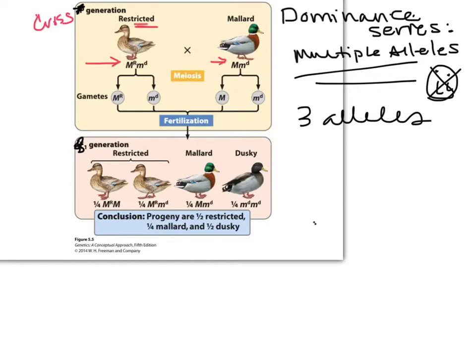And the phenotype is restricted. That's just what it looks like. So restricted is like what the females look like. If you know anything about ducks, and if you don't know anything about ducks, then you should go out to the pond and check out those ducks, because we have lots of mallard ducks out in our pond. So go check them out. So restricted looks like the females. Mallard is the classic green head. And then you can see there's also another phenotype called dusky that pops out as well.